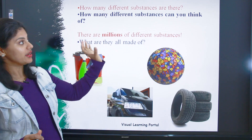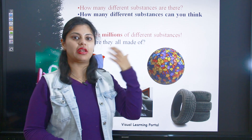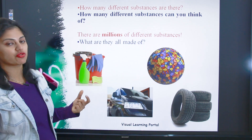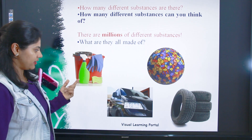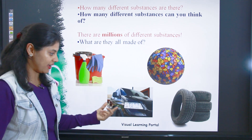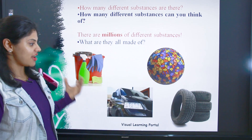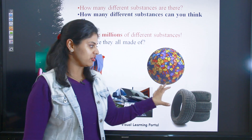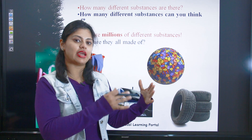So what are they made of? Basically, jitne bhi million substances aap sochte ho apni life mein, hum sab ko ek matter ki form mein kehte hain — humne us ko naam diya hai. For example: bucket, bottle, plastic, gloves, foam, car, rubber, glass — these are different kinds of things. Ye kuch examples maine pick kiye hain.